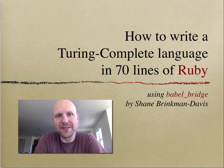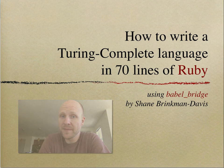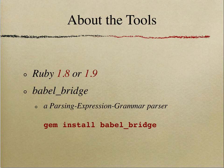Hello, I'm Shane Brinkman Davis and today I'm going to show you how to write a Turing complete language in 70 lines of Ruby. First, a little bit about the tools. This is going to work in Ruby 1.8 or Ruby 1.9, so if you have Ruby set up on your system you're good to go. You will need to install a gem — the Babel Bridge gem — so you just say gem install Babel Bridge and you should be good to go.